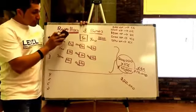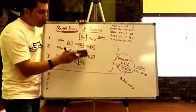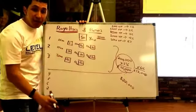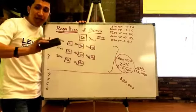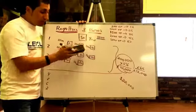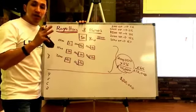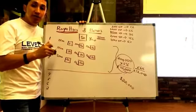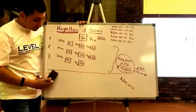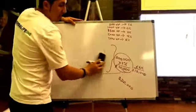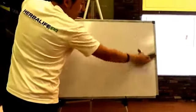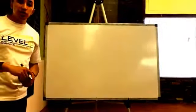To summarize: royalties and bonuses are both paid on the first three lines, and beyond to infinity. You always get paid 5% royalties as long as you do at least 2,500 volume points. You get 2% bonus on GET Team, 4% on Millionaire Team, and 6% on President's Team. You can see the average income for distributors on herbalife.com. Any questions should be directed to your sponsor — this video is for training purposes to help you understand where the checks come from.